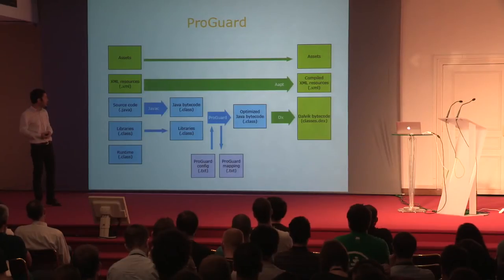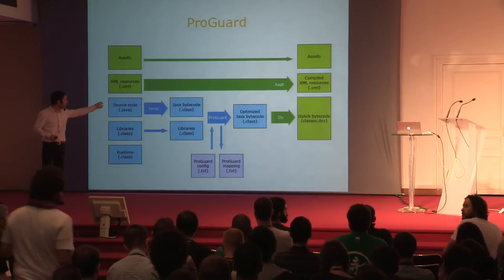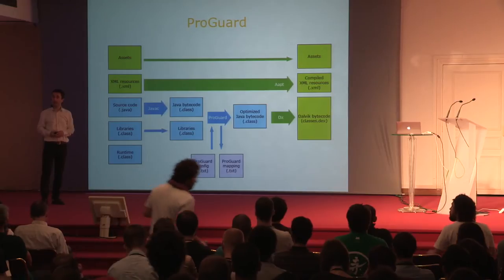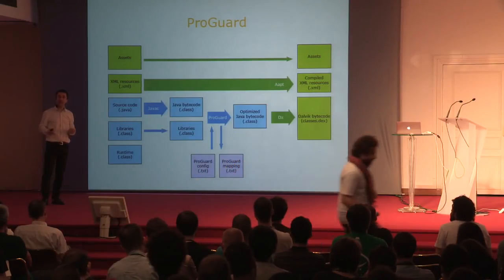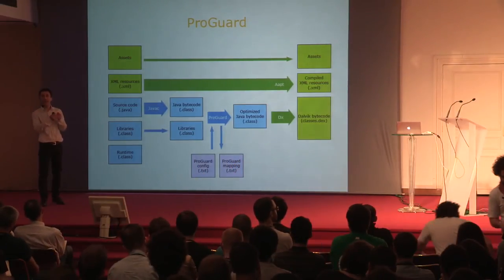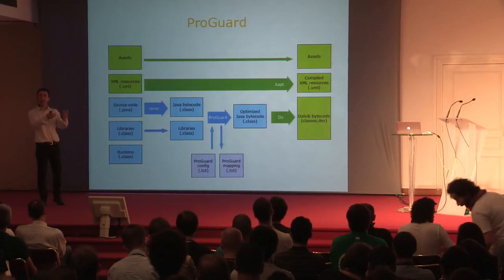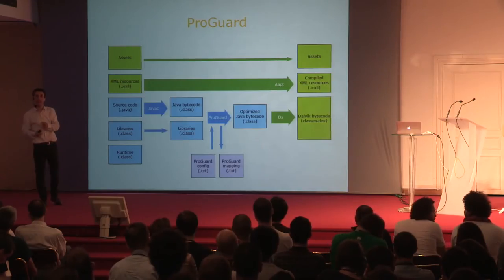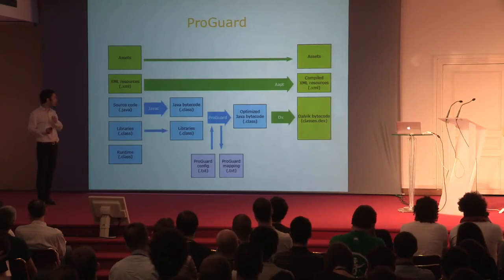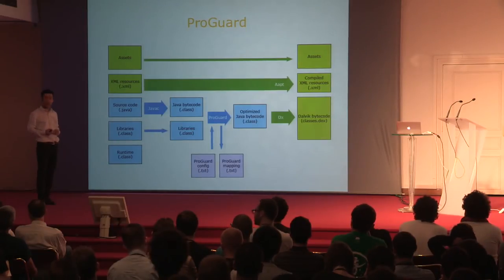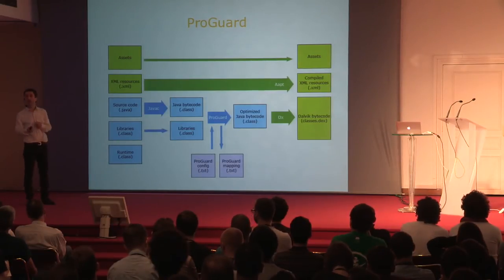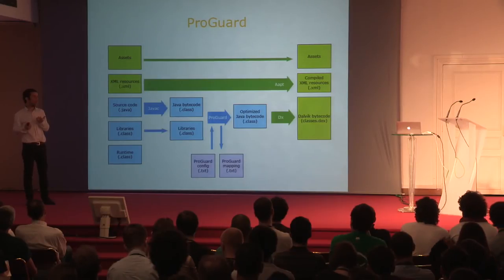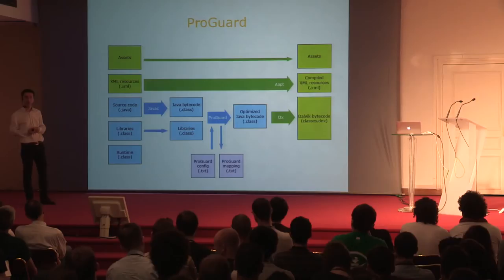ProGuard also writes out a mapping file—a file that contains all the original names with their obfuscated counterparts. So for all classes, fields, and methods that can be renamed, you can find the original names and the obfuscated names in that file, which is useful if you want to make sense of stack traces that you might get from a processed application.